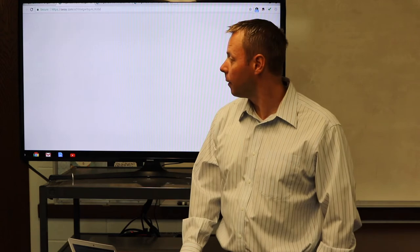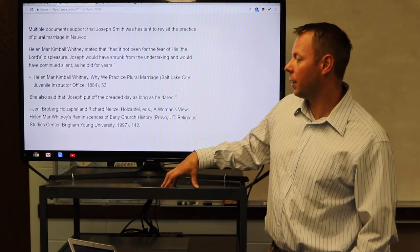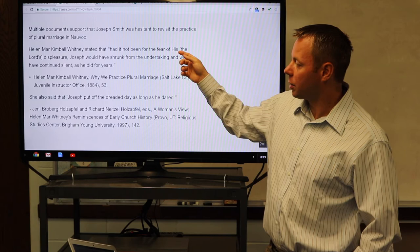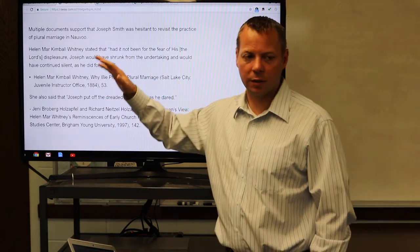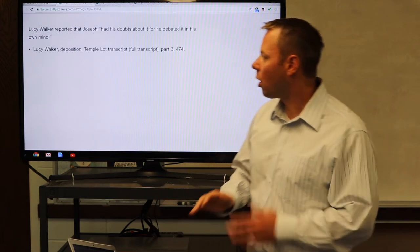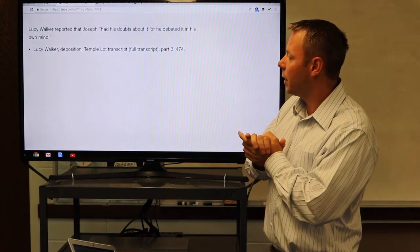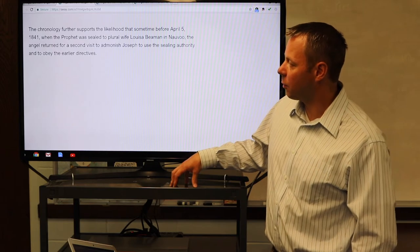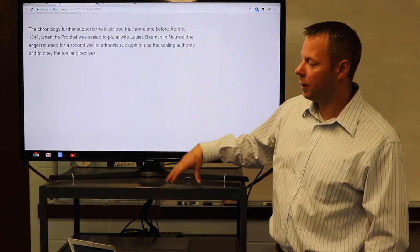Evidence supports that afterward the prophet taught no one about plural marriage, or even mentioned the subject during the next five to six years. Multiple documents support that Joseph Smith was hesitant to revisit the practice of plural marriage in Nauvoo. Helen Mar Kimball Whitney said: Had it not been for the fear of the Lord's displeasure, Joseph would have shrunk from the undertaking, and would have continued silent as he did for years. She also said that Joseph put off the dreaded day as long as he dared. Lucy Walker reported that Joseph had his doubts about it, for he debated it in his own mind.